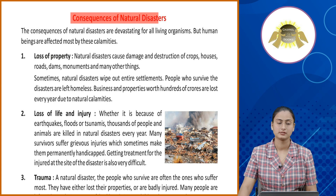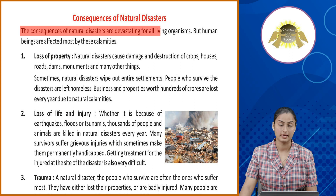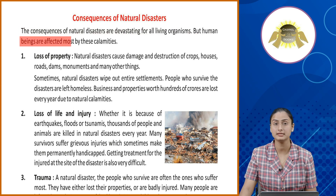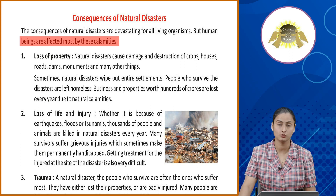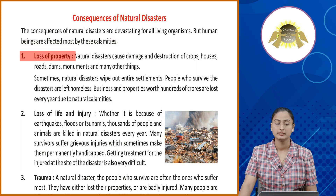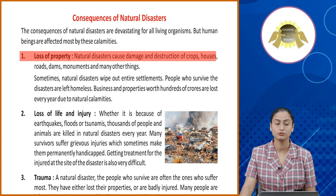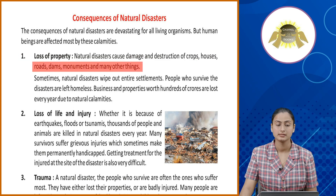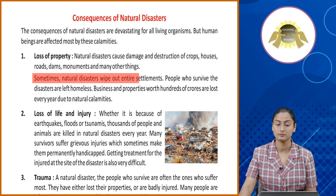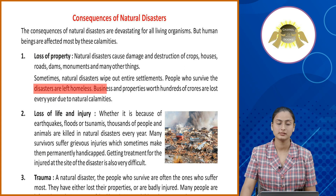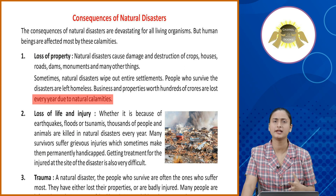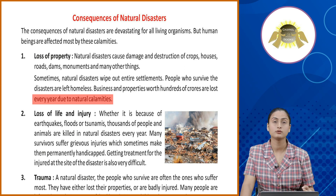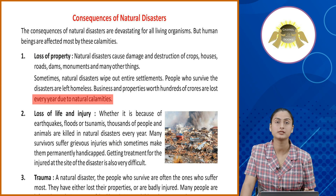Consequences of natural disasters. The consequences of natural disasters are devastating for all living organisms, but human beings are affected most by these calamities. First, loss of property: natural disasters cause damage and destruction of crops, houses, roads, dams, monuments and many other things. Sometimes, natural disasters wipe out entire settlements. People who survive the disasters are left homeless. Business and properties worth hundreds of crores are lost every year due to natural calamities. Natural disasters ke bohot saari consequences hote hai, aur sabse zyada jisko suffer karna parta hai wo hote hai human beings. Disasters ki wajah se bohot saari logon ki jaanein bhi jaati hai, property ki bhi nuqsaan ho jaata hai, saath hi saath jo kuch log bach jaate hai wo sare homeless ho jaate hai.